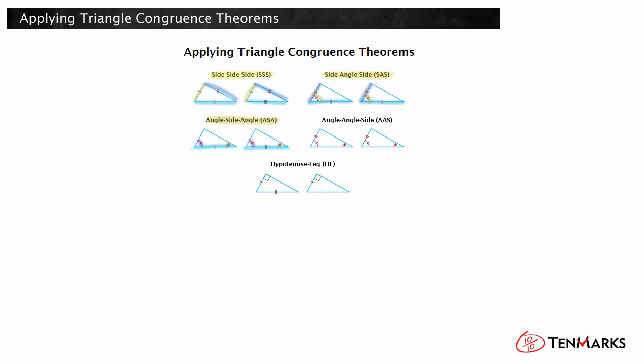However, if the congruent sides are across from a pair of congruent angles, we can use the AAS congruence theorem to say the triangles are congruent.